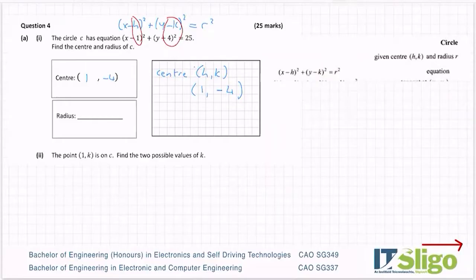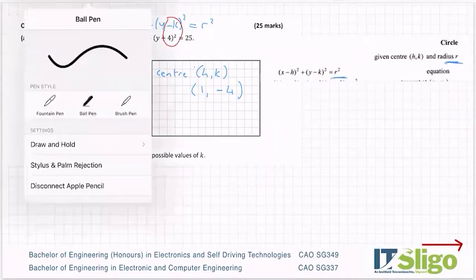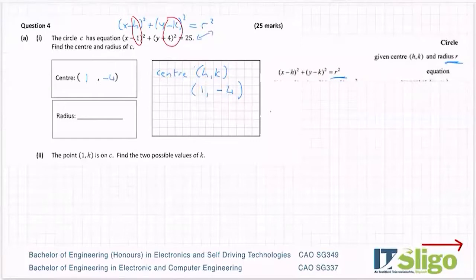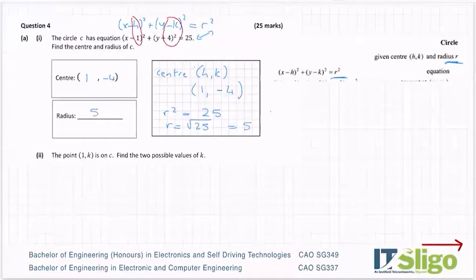For the radius: r squared equals 25, so r equals the square root of 25, which is 5. There could be 5 to 10 marks for that depending on the question, but it's a nice little question once you know what you're doing.